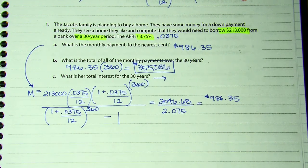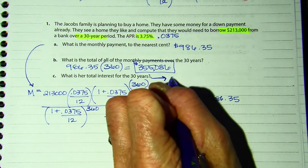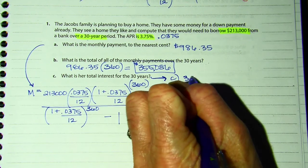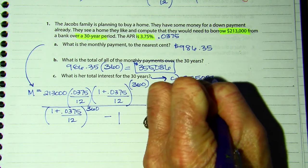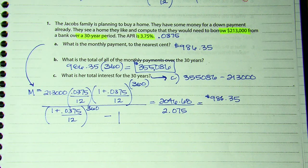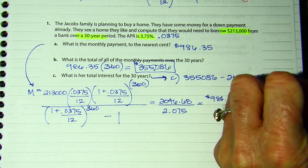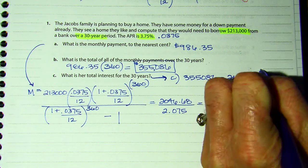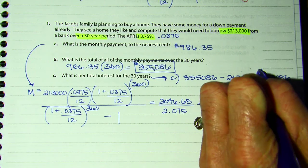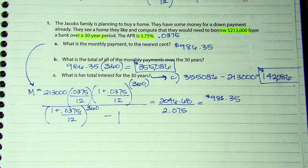Part C: what is their total interest? Total interest would be the total they're going to pay minus the amount they borrowed — they only borrowed $213,000. So they will pay over $142,860 in interest. So be careful when you are borrowing money; it ends up costing you a lot of money.